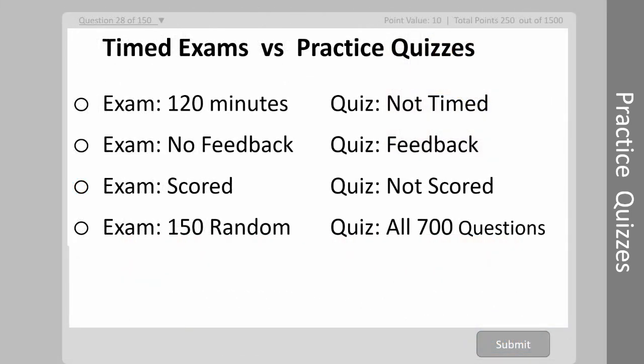Now I'm going to show you the difference between timed exams and practice quizzes. For the timed exams, they're always limited to 120 minutes to replicate the length of the CWI exam, whereas quizzes are not timed. In the exam, you don't get immediate feedback, but you'll get the results at the end. In the quizzes, you get immediate feedback whenever you submit your answer. The exams are scored so you can track how well you're doing, and quizzes are never scored.